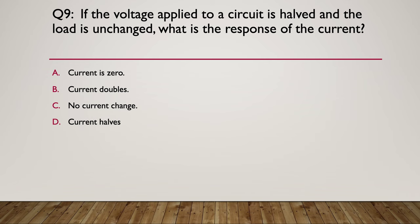Question nine, if the voltage applied to a circuit is halved and the load is unchanged, what is the response of the current? So the current's going to be zero, the current doubles, no current change at all, or the current halves? So pause here, have a think about it and again draw a circuit if it helps you. The hint is, the relationship between voltage and current, proportional or inversely proportional? So write out your Ohm's Law formula and think about it. So the answer is, if the voltage applied to a circuit is halved, if the voltage goes down the current also has to go down. They are directly proportional to each other. So if one goes down the other must also go down.